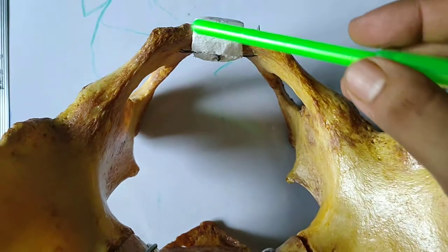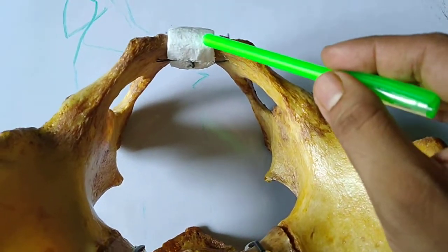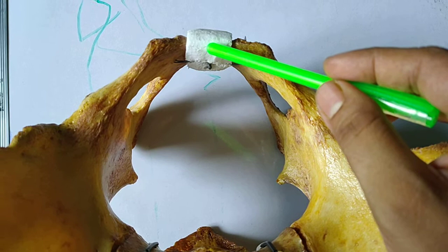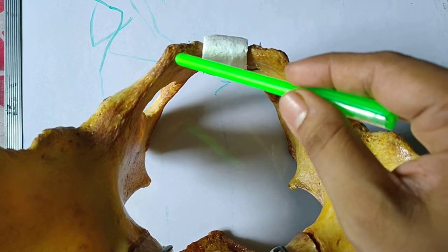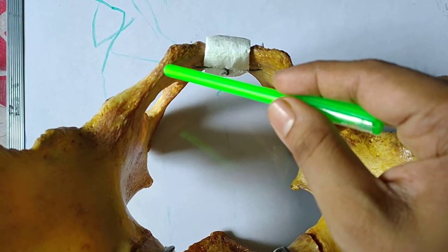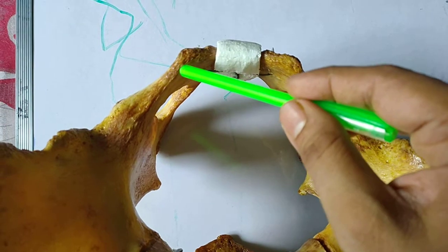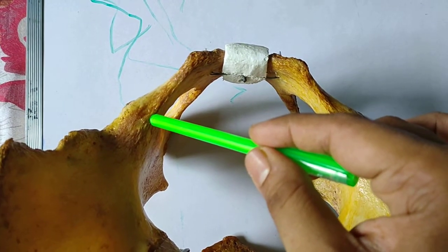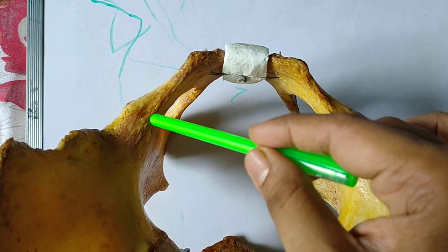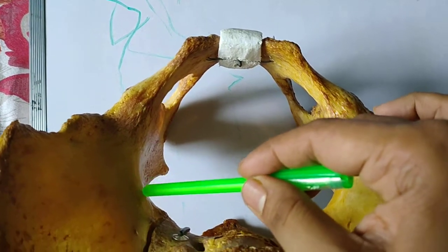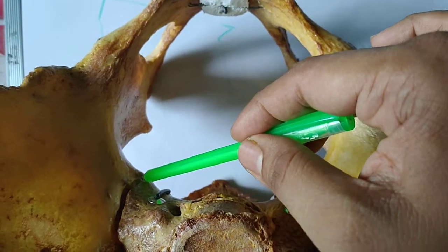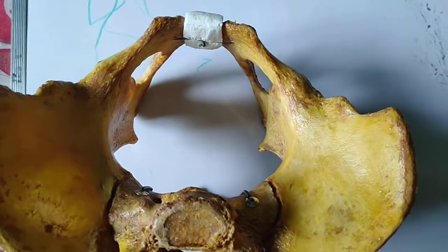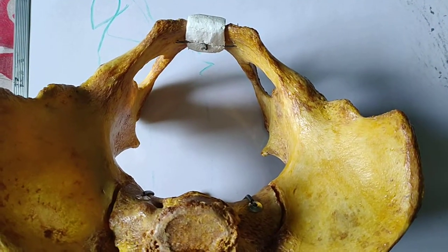To recap from this side: the boundary starts at the upper border of the symphysis pubis, then the pubic crest, then the pubic tubercle, then the upper border of the superior pubic rami, then the iliopubic eminence, then the iliopectineal line, then the sacroiliac joint, then the ala of the sacrum, and finally the sacral promontory. This is the complete boundary of the pelvic inlet.